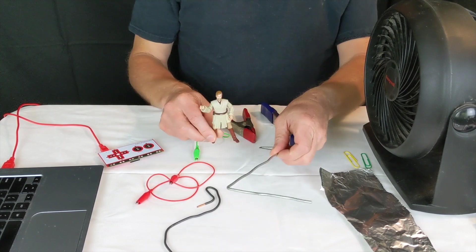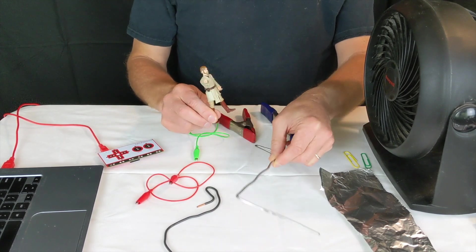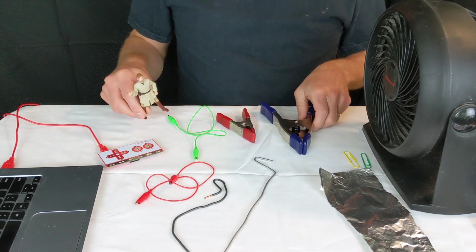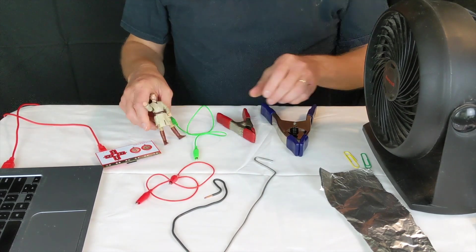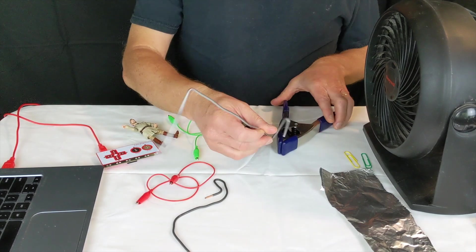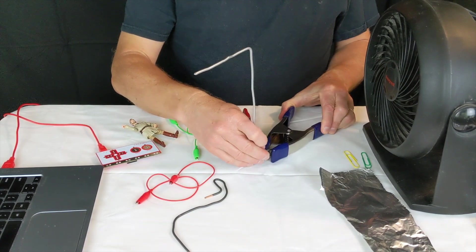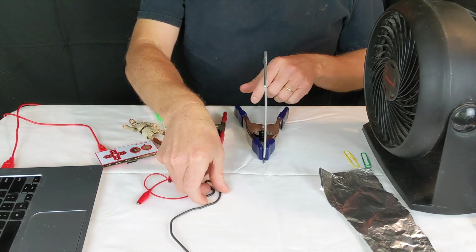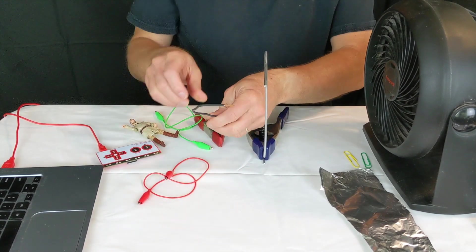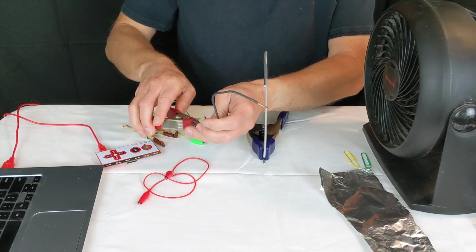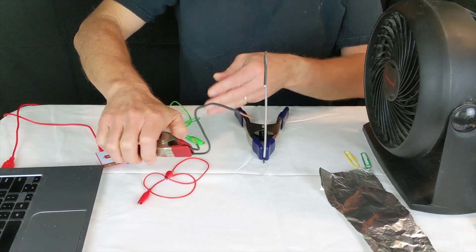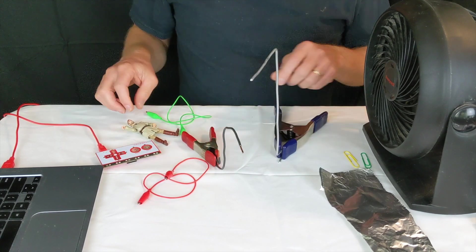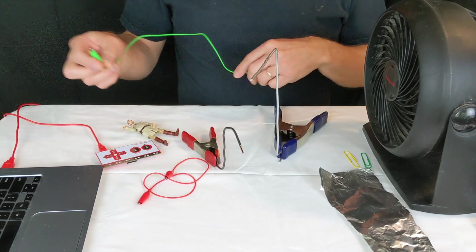And two pieces of stiff wire. And these are conductors. We're going to take this big wire here and connect it to a clamp. And then we're going to take this wire here and also connect it to a clamp. And these are going to be how we connect to the Makey Makey.